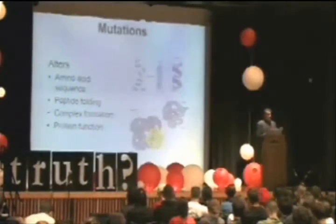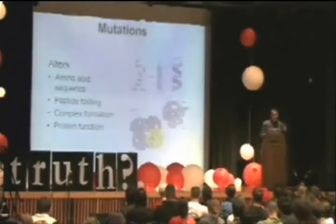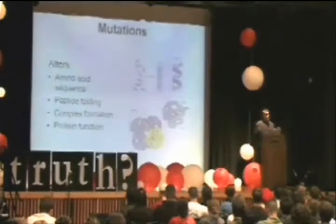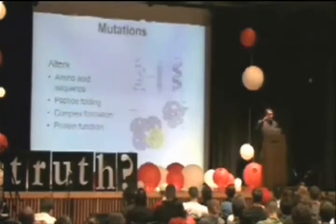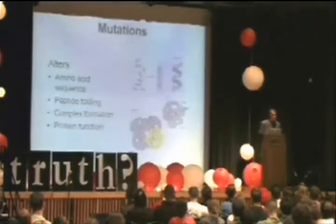When that happens, the codon that the A was part of is now going to be a different codon, because you replaced the A with the G. It's now a new coding triplet, and that means it could potentially specify a different amino acid. If it specifies a different amino acid, the amino acid sequence used to build that protein is going to be altered. Because amino acid sequences dictate the structural folding of the protein chain, the chain may fold in a different manner, and if it folds improperly, it's going to compromise the function of the protein.